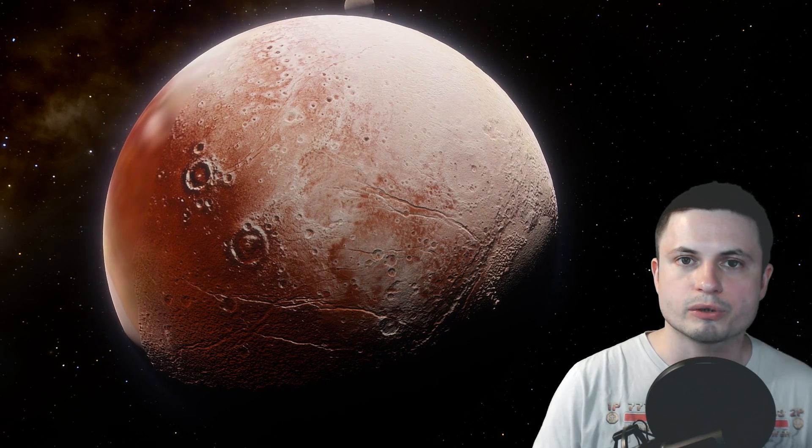If you look really closely here, specifically at Pluto, you might realize that this brownish red stuff is like everywhere. Now this is what we believe is Tholines.